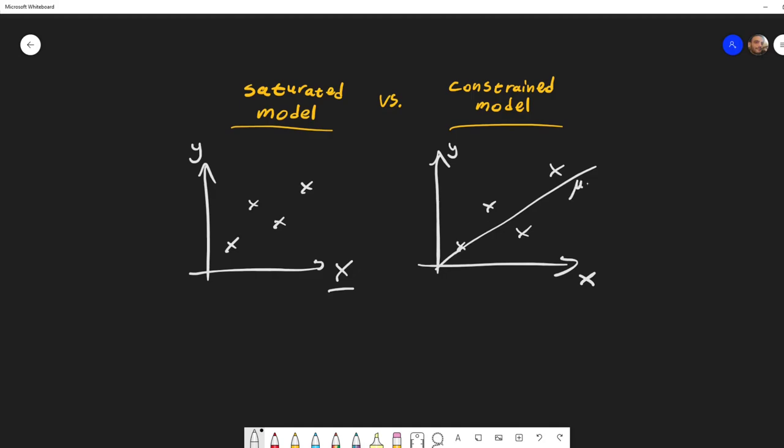So here it's mu equal x transpose beta, and what it basically says is that each point on this line is the mean of, in the normal case, normal distribution.